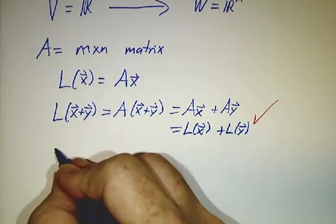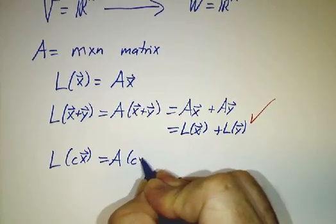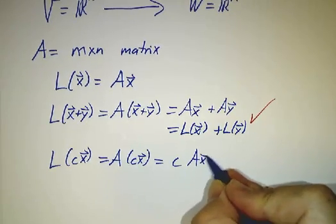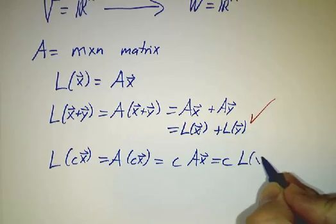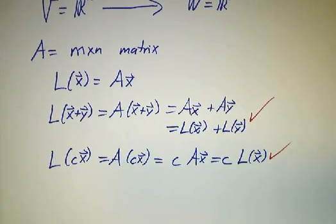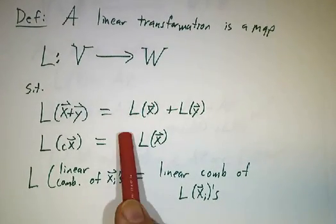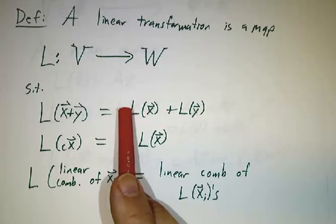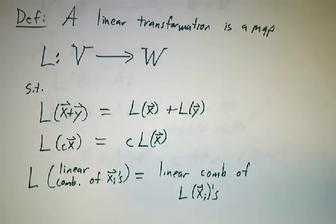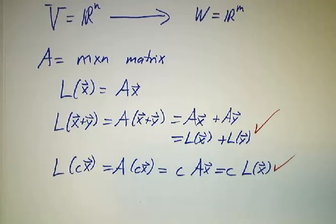If we take L of a constant times x, that's just the matrix times the constant times x. And that's the constant times L of x. Check. So it satisfies the first rule. It satisfies the second rule. And it's not hard to show that anything that satisfied the first rule and the second rule automatically satisfied the third rule. So this is a nice simple example of matrix multiplication.